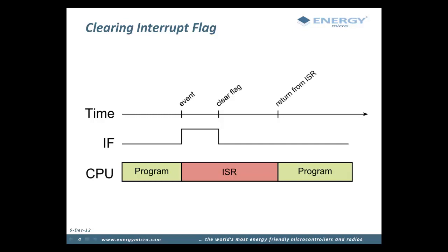Here we see the normal case where some event occurs and an interrupt is executed. We assume that the interrupt is enabled both in the peripheral and the interrupt controller already. When the event occurs, the interrupt flag goes high, which will then cause the interrupt handler to start executing. Inside the interrupt service routine, the interrupt flag is cleared, and when the service routine returns, the program execution continues where it left off.